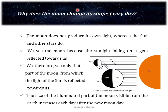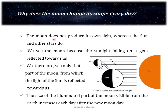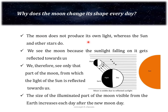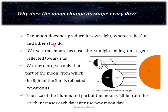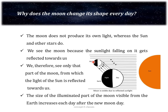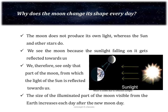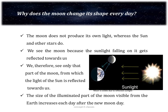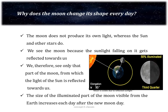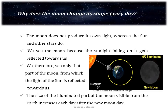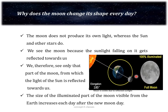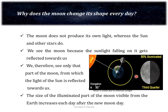Why does the moon change its shape every day? The moon is a non-luminous object — it does not produce its own light, whereas the sun and other stars do. We see the moon because the sunlight falling on it gets reflected towards us. Hence, the shape that we see is that part of the moon on which sunlight falls. For example, on the new moon day, the moon is lined up between the sun and the earth, so we see the side of the moon that is not lit by the sun.